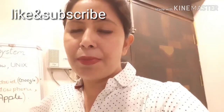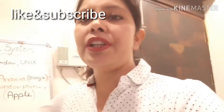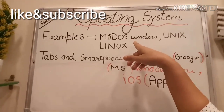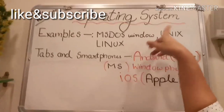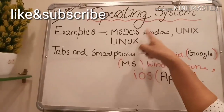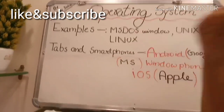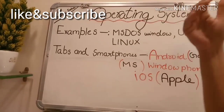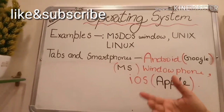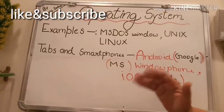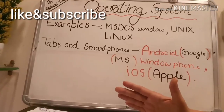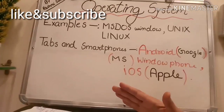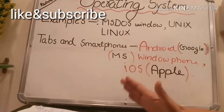Ab aap mere board par dekhenge kuch common examples of operating systems. Very popular ones in the market are MS-DOS, Windows, Unix, and Linux. MS-DOS, Unix, and Linux are almost outdated now as they are very old pattern operating systems and no longer reliable. Windows, made by Microsoft, is most popular today and has 8 versions, with the latest being Windows 10.